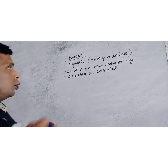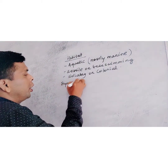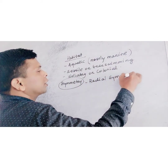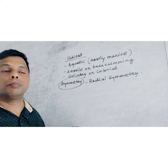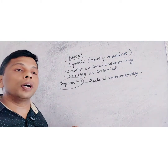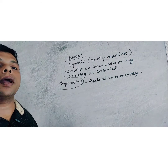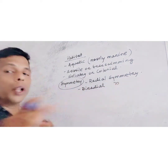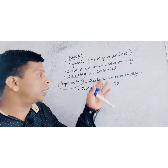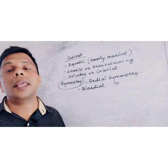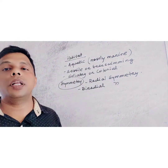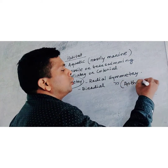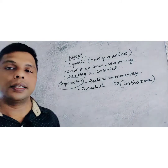Coming to symmetry, the body shows radial symmetry — at any radial plane, the body can be divided into equal parts. However, in Anthozoa, except Hydrozoa and Scyphozoa, biradial symmetry is seen, where the body can be divided into equal parts in only two planes.